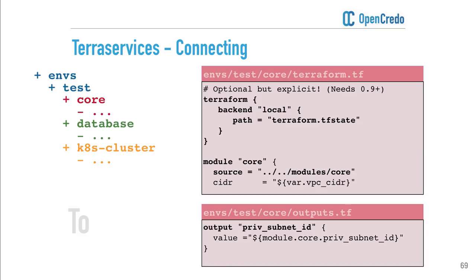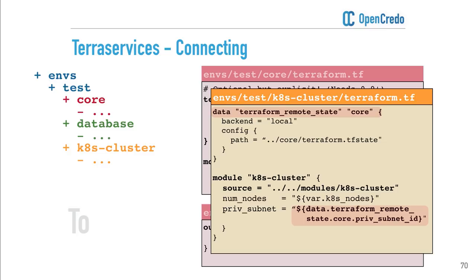In terms of how you configure the components that want to consume another component, you need to import the component you want to connect to. Our Kubernetes cluster says there's some stuff the core component output that it needs, so we use the Terraform remote state data source reference and point to the local backend where our core TF state file was. Then we just import that and pass it through to our Kubernetes setup.